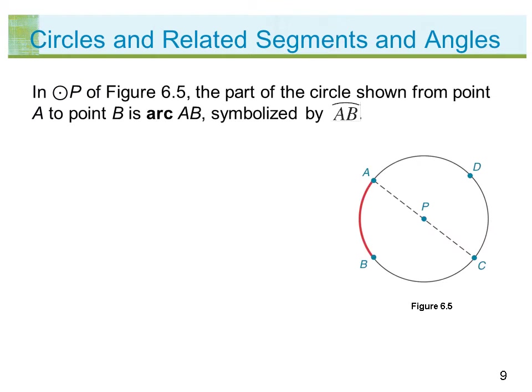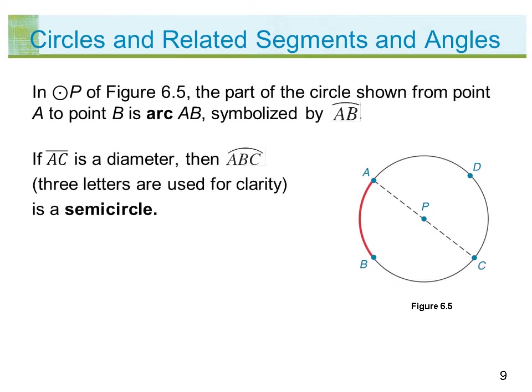In circle P of figure 6.5, the part of the circle from point A to point B is arc AB, symbolized by AB with a curve over the top. If segment AC is a diameter, then arc ABC — three letters are used for clarity — is a semicircle.